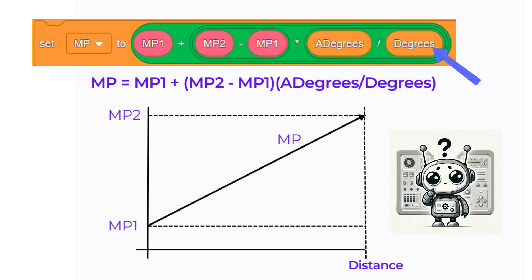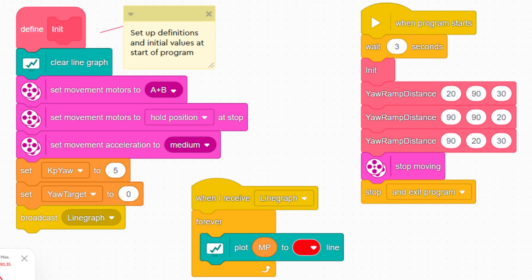Degrees is the number of degrees to travel. A degrees is the degrees travelled so far. MP varies from MP1 to MP2 over the distance specified. Let's try out the ramp with a simple program. We can use three of the my blocks we have made to ramp the speed up and down.